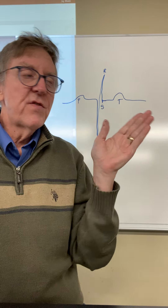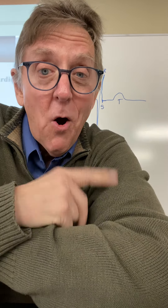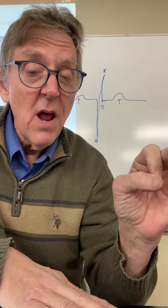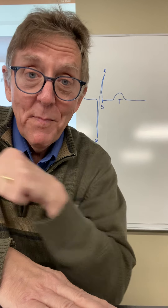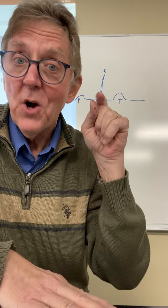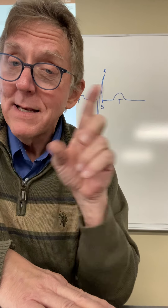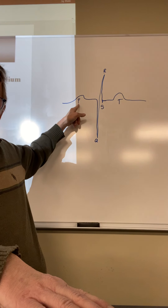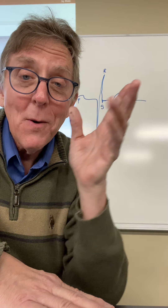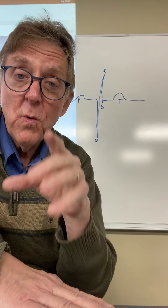We're on slide 16, and we have to think about what is the heart doing. We have the SA node, and what it's going to do — it's going to cause the two atria to contract. That's the P wave. That's what's going on. You're measuring the contraction of the two atria.